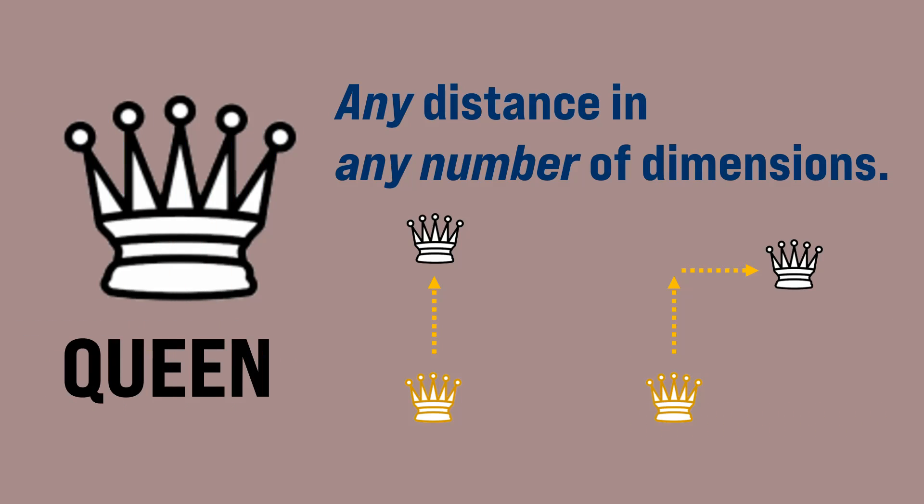The queen is just like the king, but it can move any distance. Remember that it must move the same distance in all dimensions if it's moving along. So here we have it moving one dimension, here we have it moving two dimensions. But remember, if it's using two units in this dimension, then it must move two units in this dimension as well. Again, it can also move in three or four dimensions.